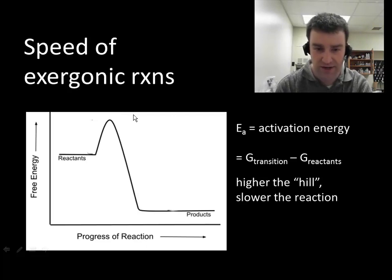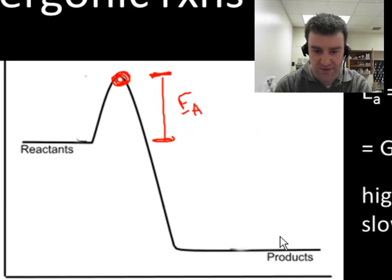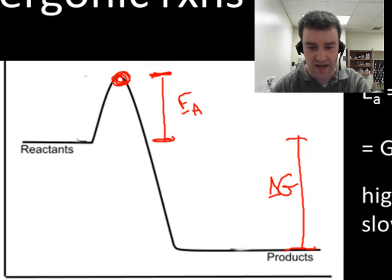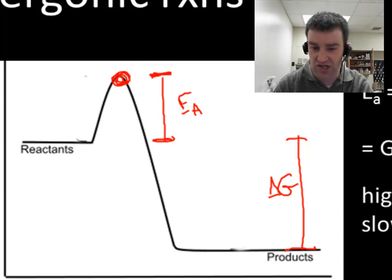Or really what activation energy is, is it's the difference between the energy level of the transition state and the initial reactants. So this kind of quantity here represents activation energy. Remember that the difference between the products and the reactants was delta G. So make sure you see that activation energy and delta G, the change in free energy, are quite different concepts.